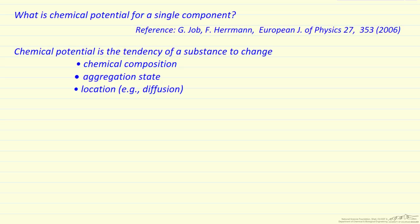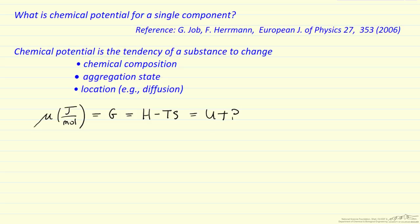Looking at the definition, the chemical potential uses the symbol μ, and the units of chemical potential are energy per mole. This is exactly the same as the Gibbs free energy for a single component. Gibbs free energy is defined as H minus TS, and H is U plus PV. This gives us an equation for how we would calculate chemical potential.